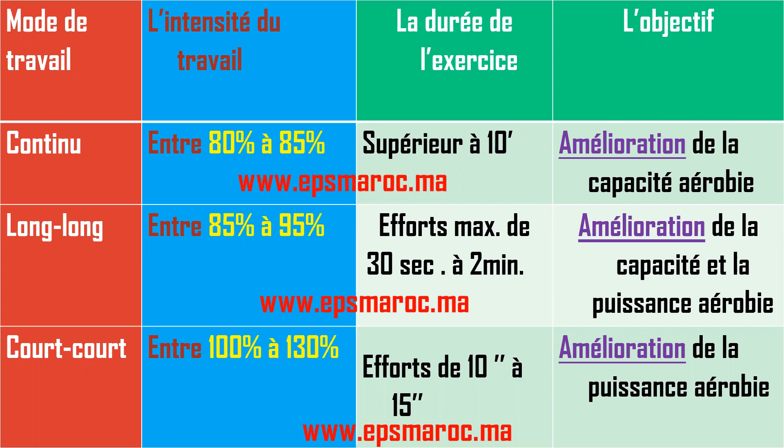Pour le mode long-long, l'intensité du travail est entre 85% et 95%. La durée de l'exercice est un effort maximal de 30 secondes à 2 minutes. L'objectif, c'est l'amélioration de la capacité et la puissance aérobique. Pour le mode court-court, l'intensité du travail est entre 100% et 130%. La durée de l'exercice est un effort de 10 à 15 secondes. L'objectif, c'est l'amélioration de la puissance aérobique.